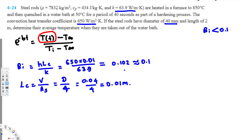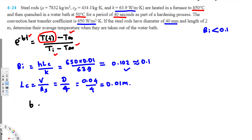Since this passes the lumped system check, we can use the lumped system analysis equation to solve for T(t). Let's verify we have all the information needed. We have T∞ (ambient temperature = 50°C) and T_initial (= 850°C). On the other side we need b and t. We know t = 40 seconds, but we still need to find b. b is essentially the reciprocal of the time constant.